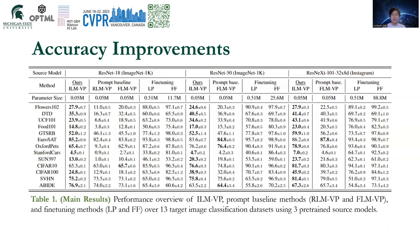We applied our method on 13 different datasets and three different source network architectures. We compare our method with the visual prompt baselines — random label mapping and frequency label mapping, the latter being the SOTA in the literature. We also add two traditional transfer learning methods, linear probing and full fine-tuning, for comparison. Our method usually outperforms the visual prompt baselines by a large margin. In addition, on the medical dataset comprising only little data, our method even outperforms linear probing and full fine-tuning baselines, highlighting the practical value of visual prompting and our label mapping technique.